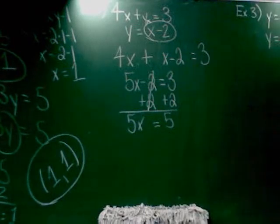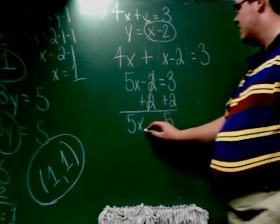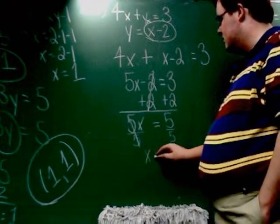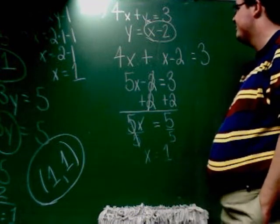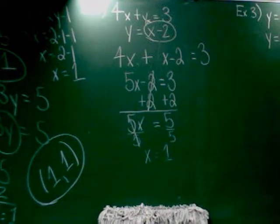So, I do that and I get 5x equals 5. Divide each side by—you really can't screw this one up—5. And we get x equals 1. Alright, half the problem done. Half to go.